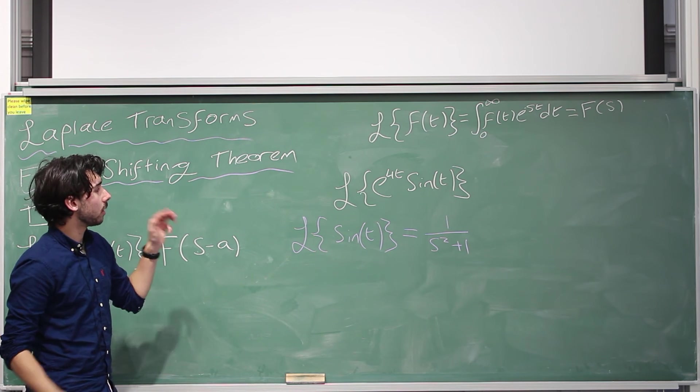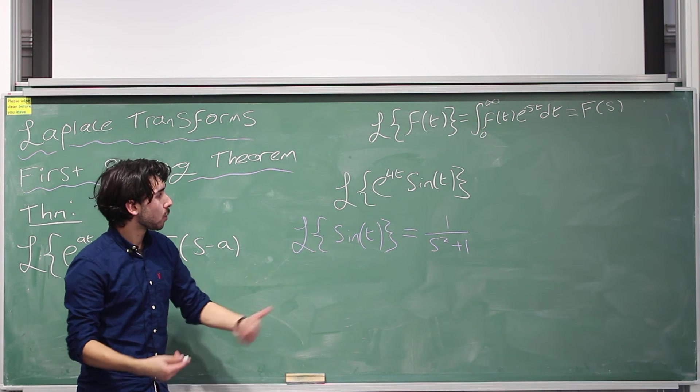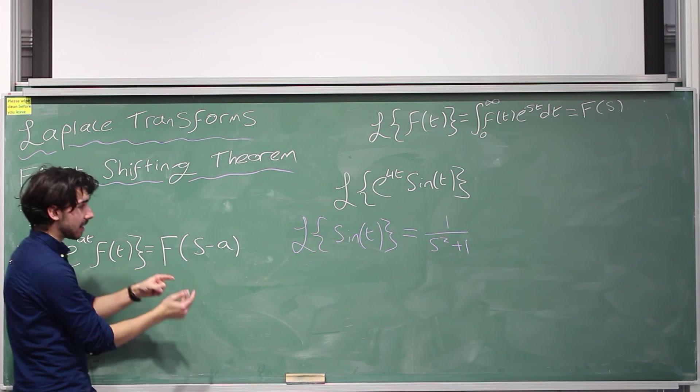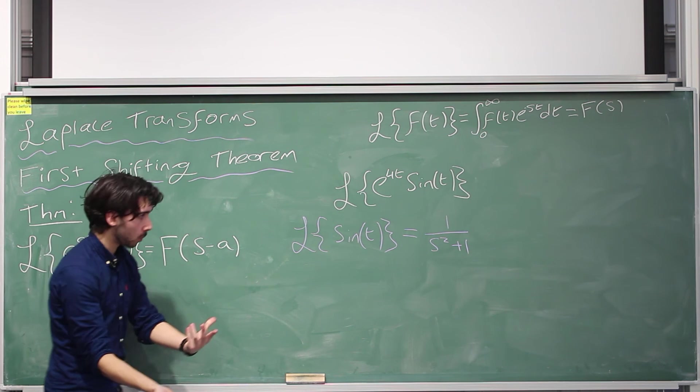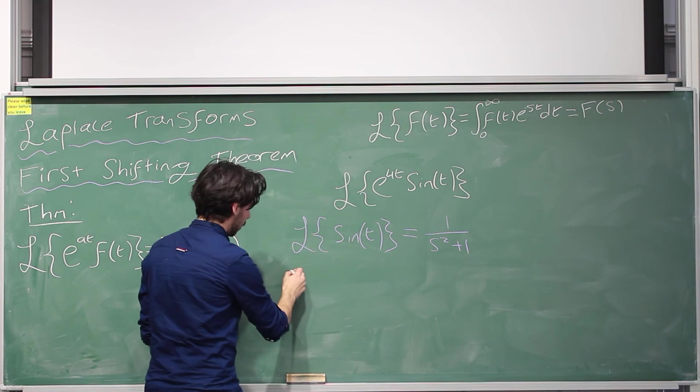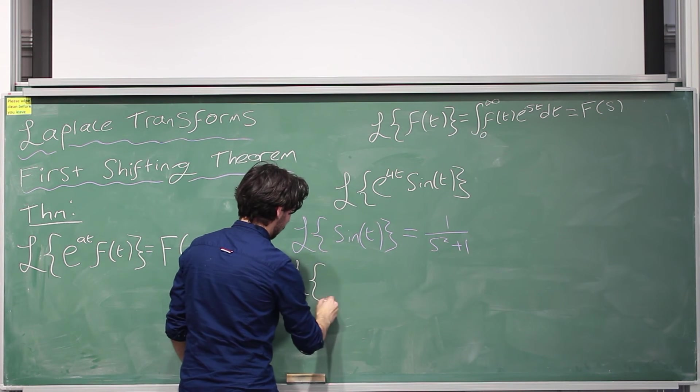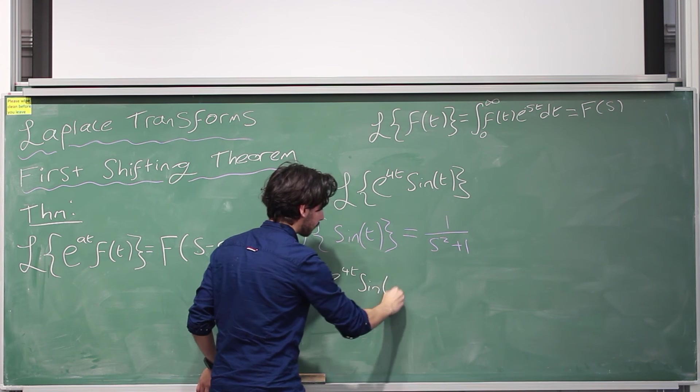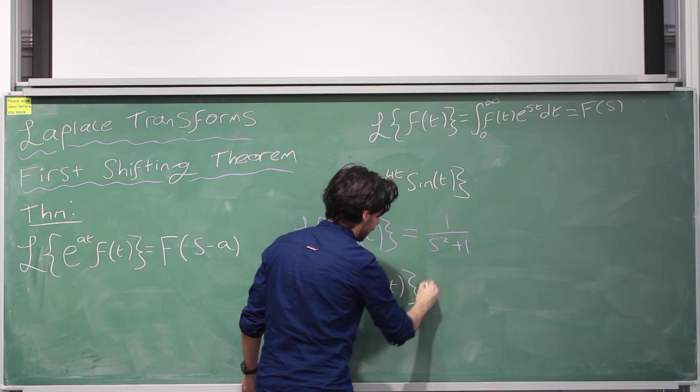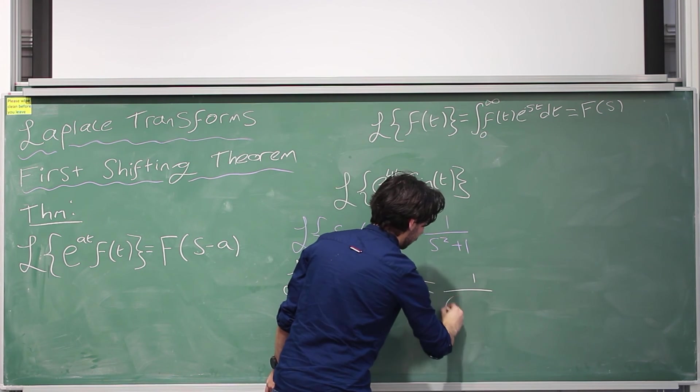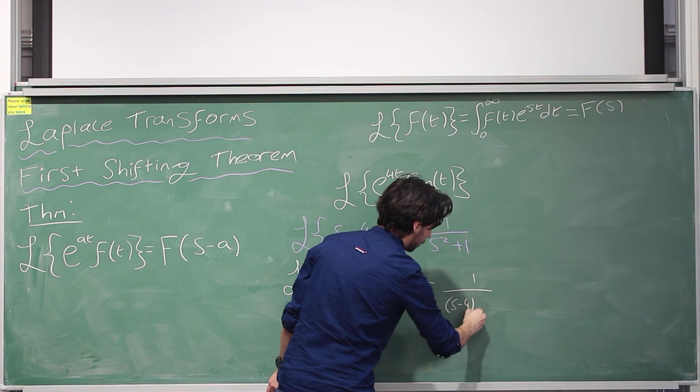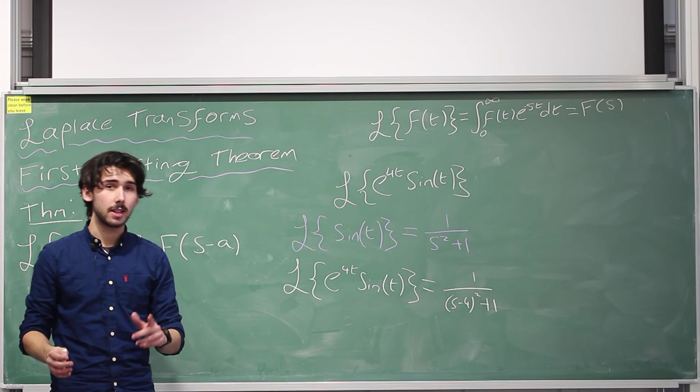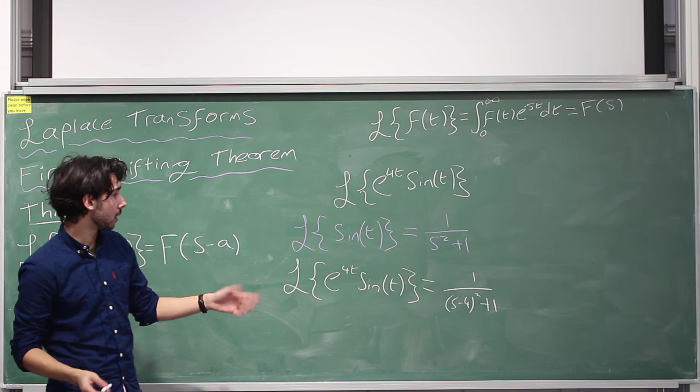So if we want to, I'm just going to go back to white because it looks kind of silly. If we want to do the Laplace transform of e to the 4t times sine t, all we're going to do is replace the s's with s minus 4s. So this Laplace transform of e to the 4t sine t, like so, this is 1 over s minus 4 in brackets squared plus 1, and it's really that simple, that is the answer.